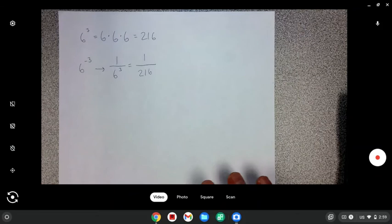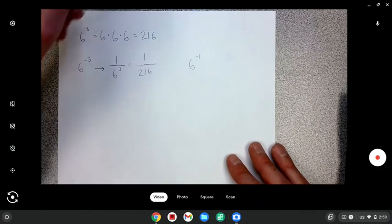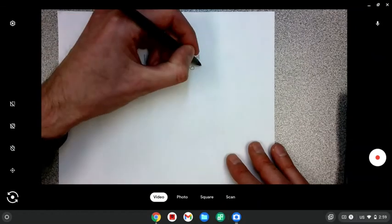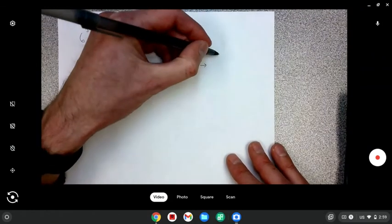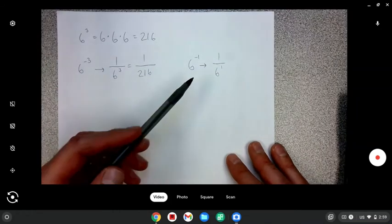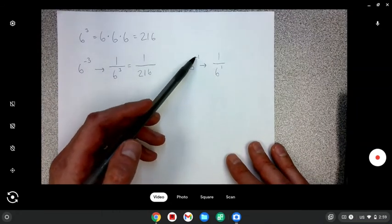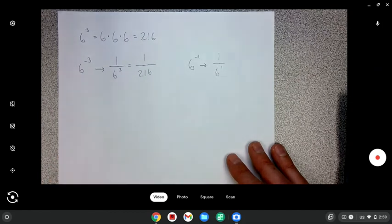So the way you deal with any negative exponent, let's say it's six to the negative one power. A negative exponent is going to flip it into a fraction. One over six to the one. And when I flip it into that fraction, I'm just going to take whatever this exponent is, except it's no longer going to be negative. It's going to be positive.